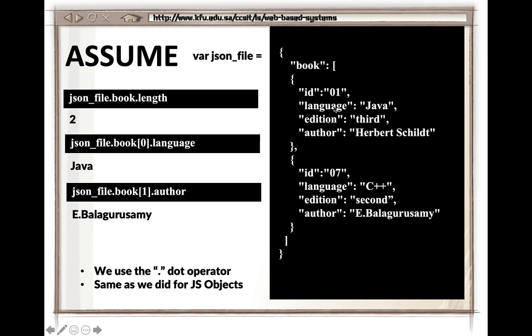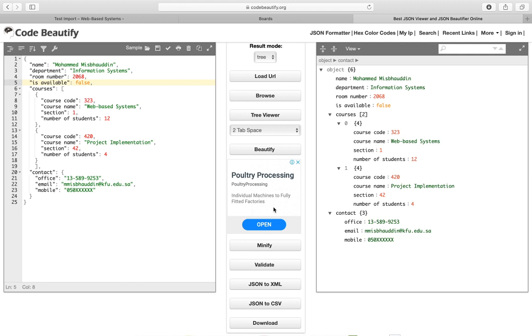To get the language of the first book: json_file.book[0].language — this accesses the 'book' array, index 0 for the first item (arrays start at 0), then dot notation for the 'language' key, returning 'Java'. Similarly, to get the author of the second book: json_file.book[1].author — using index 1 for the second book, then dot 'author' to retrieve the author name.